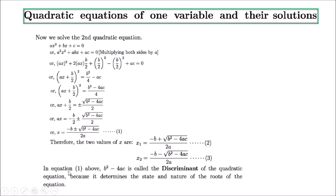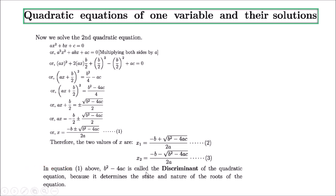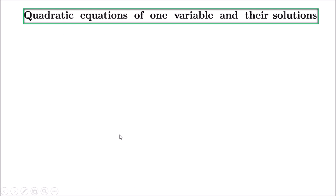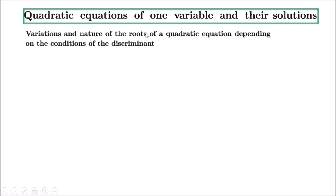In this equation, b² − 4ac is called the discriminant of the quadratic equation. This part is very important for MCQs — questions will ask you to find the discriminant of a given quadratic equation. The discriminant determines the state and nature of the roots of the equation, so we need to understand it carefully.